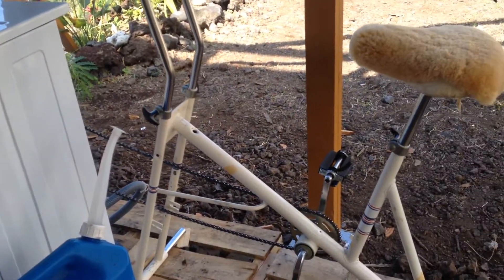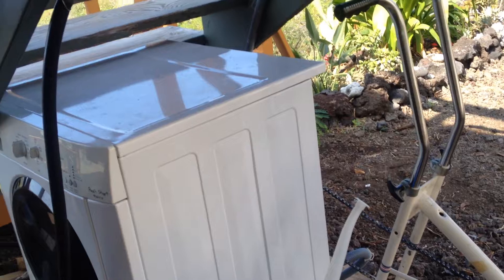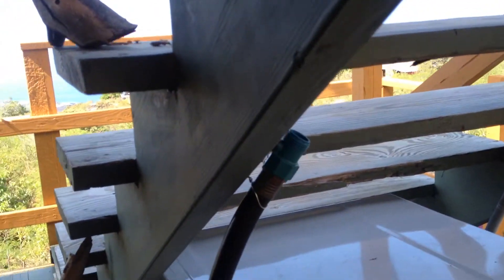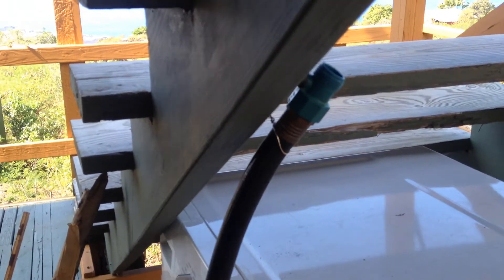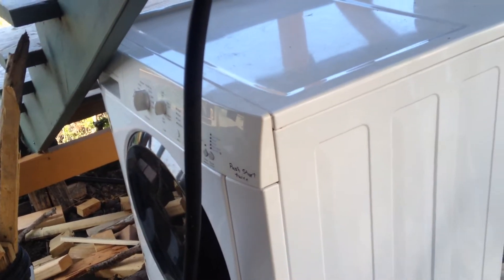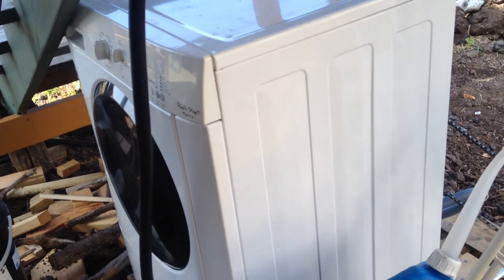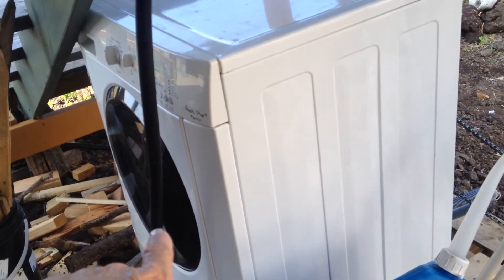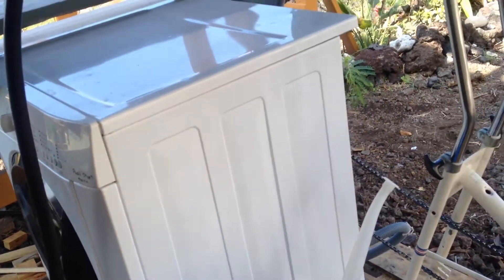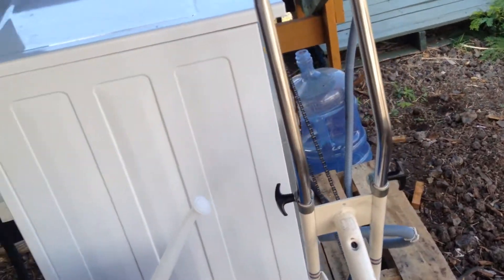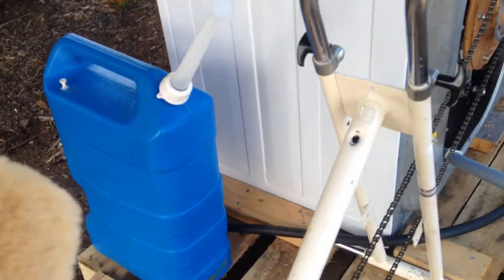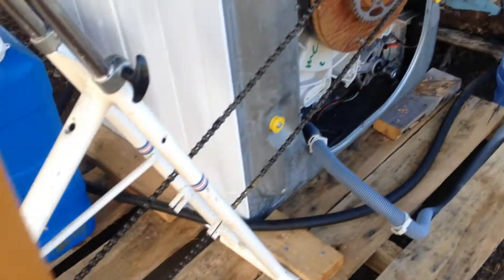This is our off-grid bicycle-powered clothes washer. We simply fill it up with this garden hose right here through the front door until it's at the bottom level of the glass. We estimate that to be about seven gallons for a heavy load.